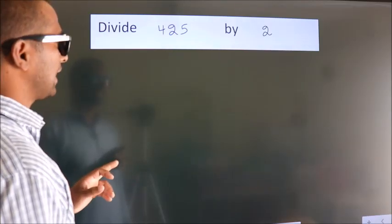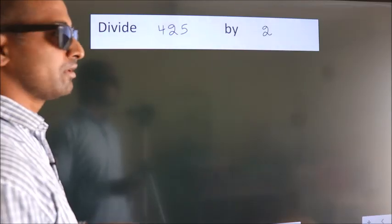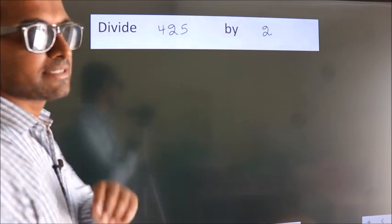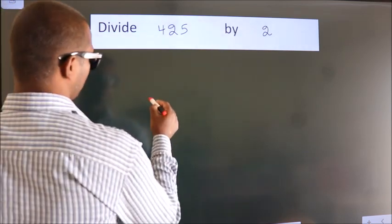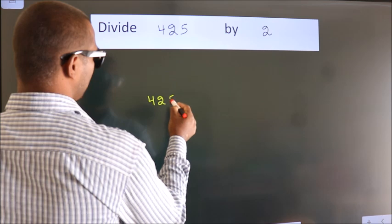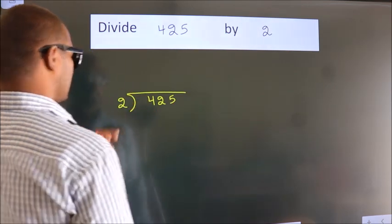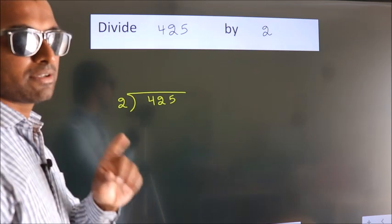Divide 425 by 2. To do this division, we should frame it in this way: 425 here, 2 here. This is your step 1.